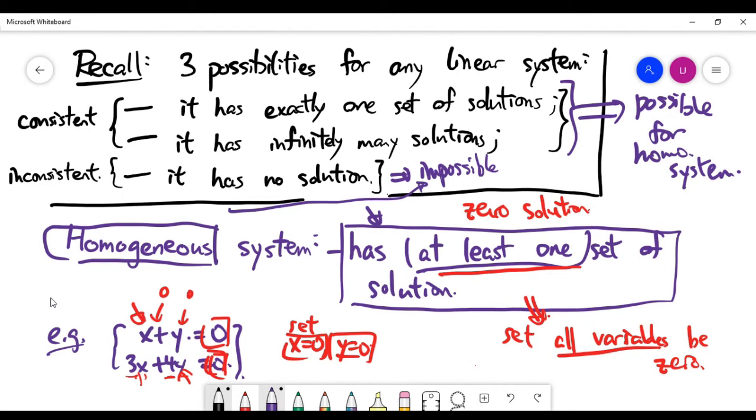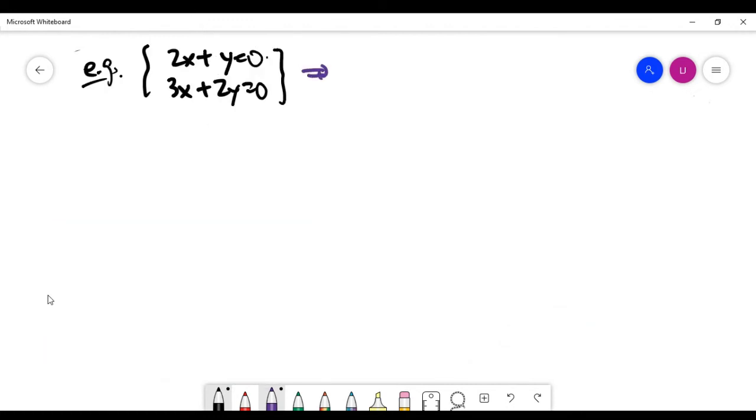This one clearly is a homogeneous system because the right-hand side is zero. You can write it in a matrix form if you want, and we can do a row operation.